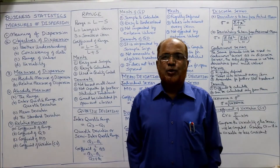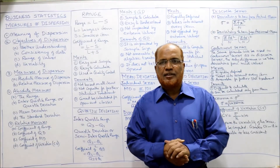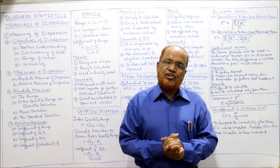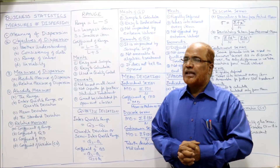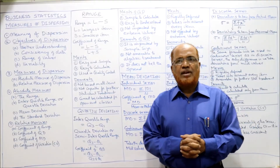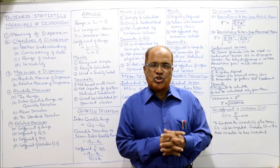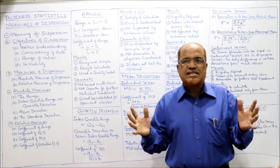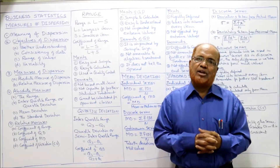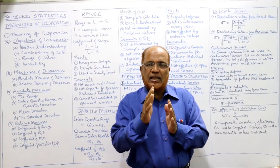Hello students, welcome back to the lectures of business statistics. So far we have completed three topics: introduction to statistics, diagrammatic and graphic presentations, and measures of central tendency. Now we are moving on to the next topic called measures of dispersion. In measures of central tendency, we have seen how to calculate a single value representing a huge mass of data — that is called the average. Average plays a very important role in understanding the characteristic features of the data, but our study will be incomplete if we depend only on average, as average has its own limitations.